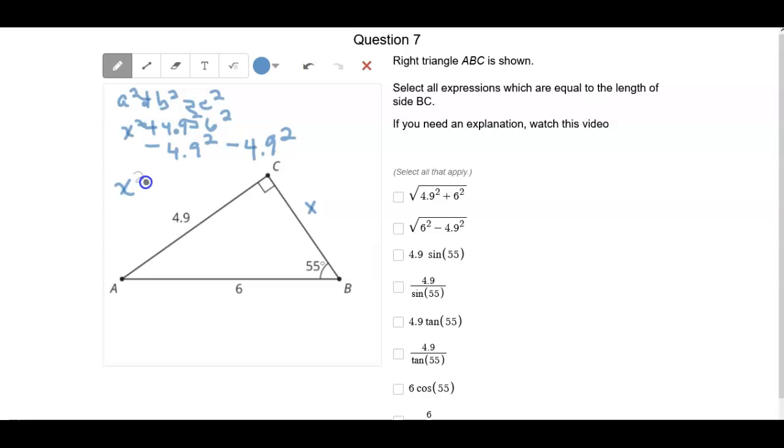And so then we would get x squared is equal to 6 squared minus 4.9 squared. And you kind of see where this is going with this one. It's kind of looking like it might be this one. And then the last thing that we have to do with the Pythagorean Theorem all the time is take the square root. So x would be equal to, or the length of BC would be equal to, the square root of 6 squared minus 4.9 squared. So this one would actually work.